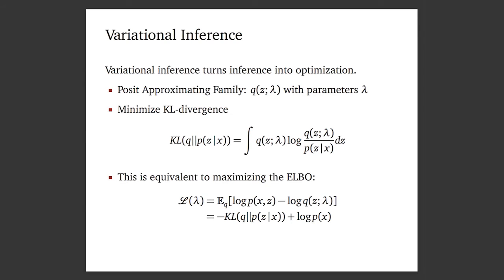One solution is variational inference. You posit an approximating family — a distribution over the latent variables with some free parameters lambda. You want to minimize the KL divergence from that approximating family to the posterior distribution. Minimizing this KL is equivalent to maximizing a lower bound called the ELBO, and this equality shows why: there's a constant that doesn't depend on the approximation that you can pull out.